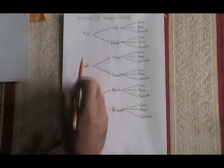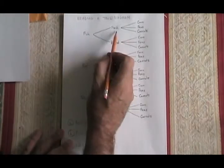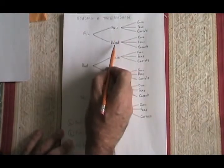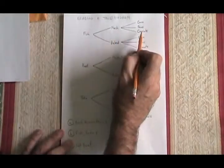fish, beef or tofu, a potato either mashed or baked, and a vegetable, corn, peas or carrots.